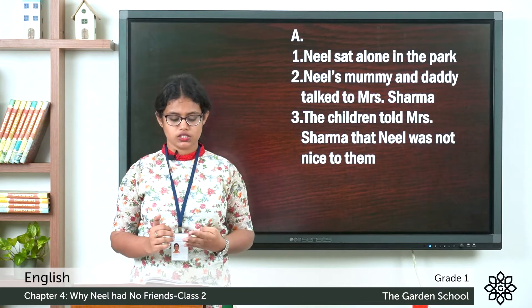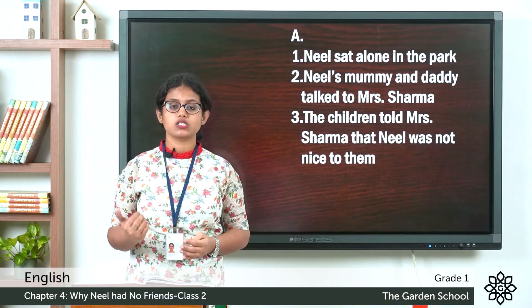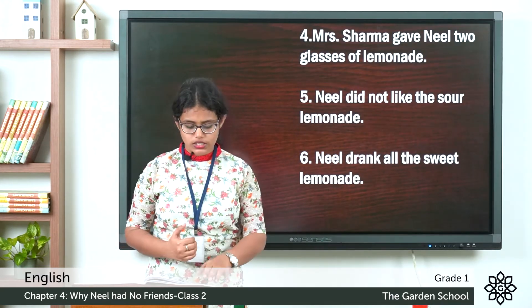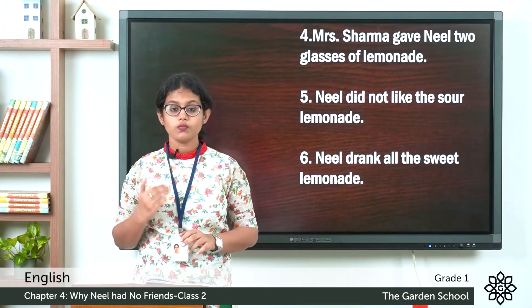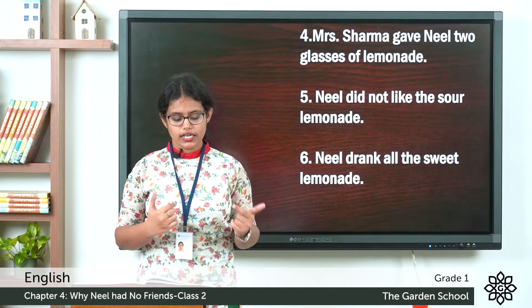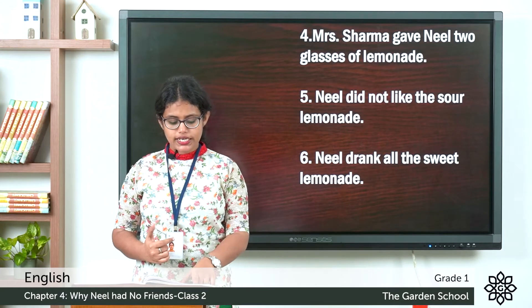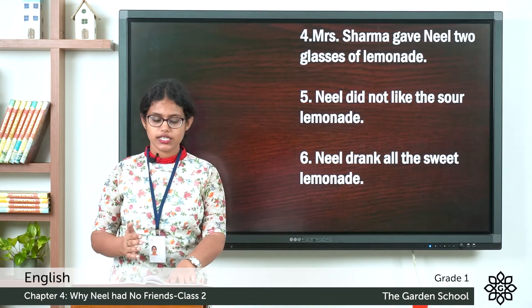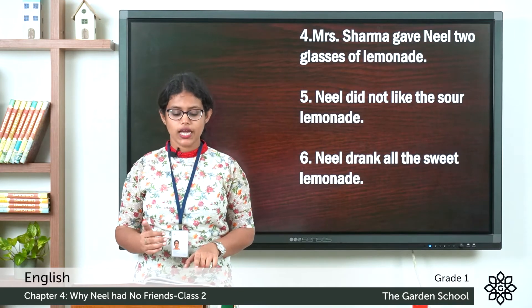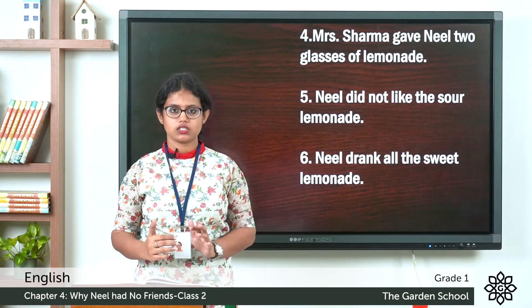Then the fourth sentence: Mrs. Sharma gave Neil two glasses of lemonade. The fifth sentence is: Neil did not like the sour lemonade. First she gave the sour lemonade, then she gave the sweet one. The sixth sentence is: Neil drank all the sweet lemonade. And the last sentence is: Neil understood that he should be nice to others.